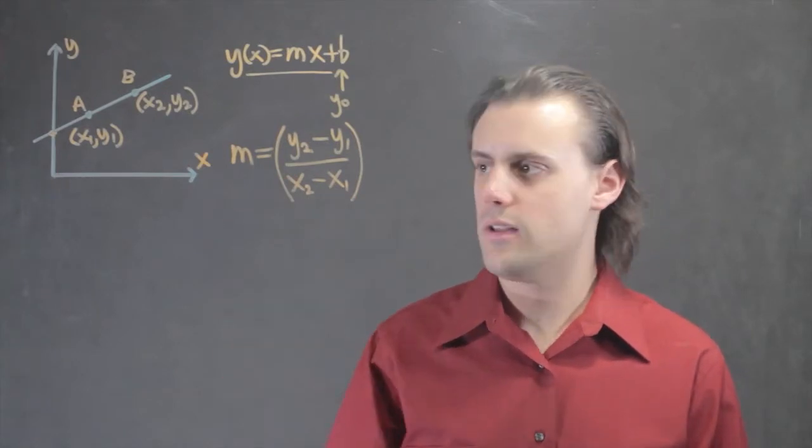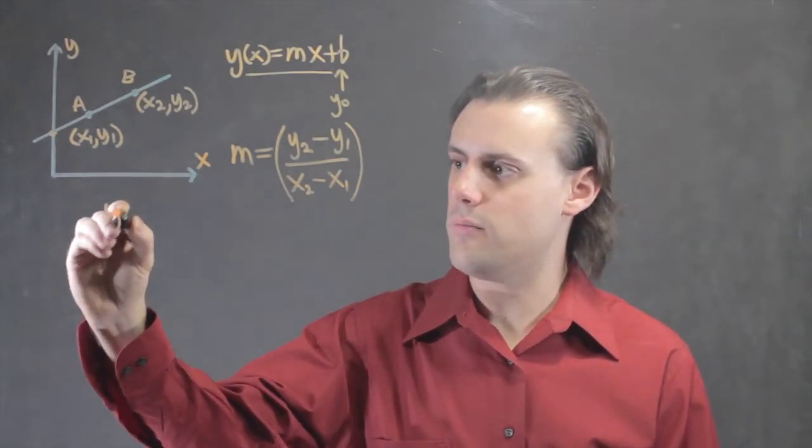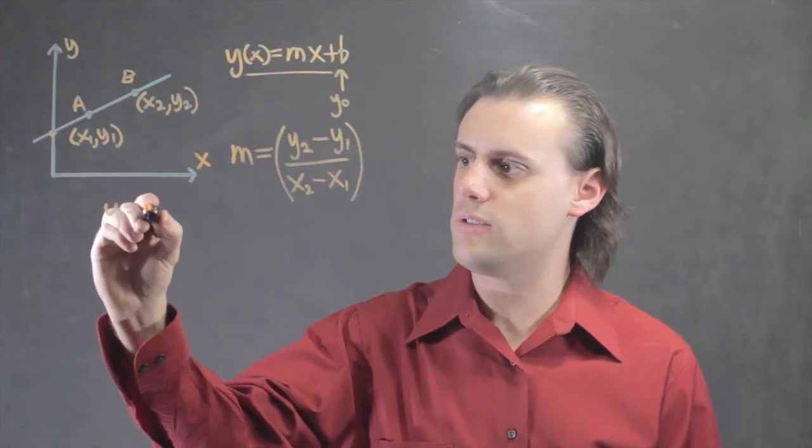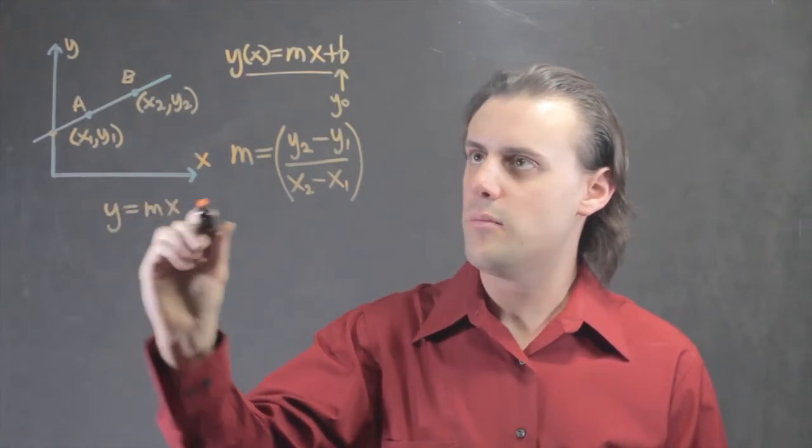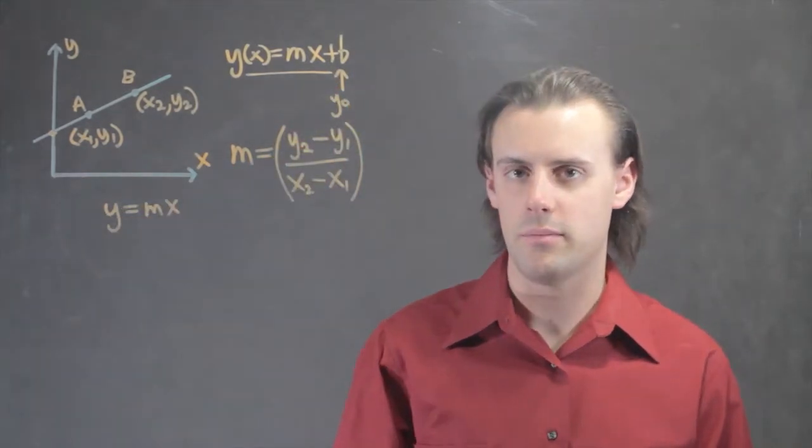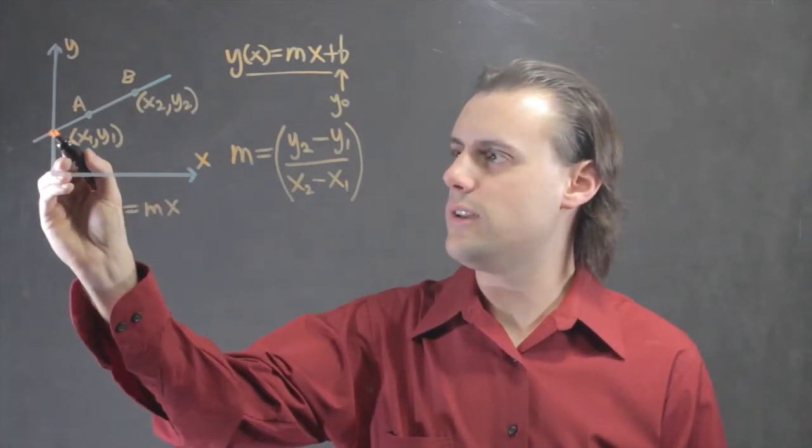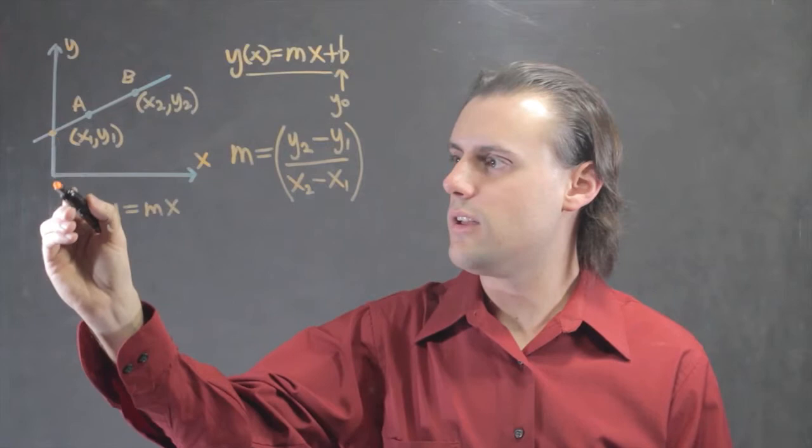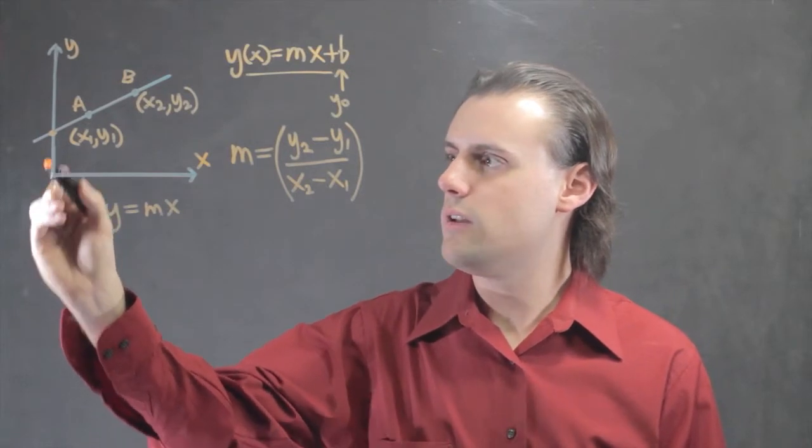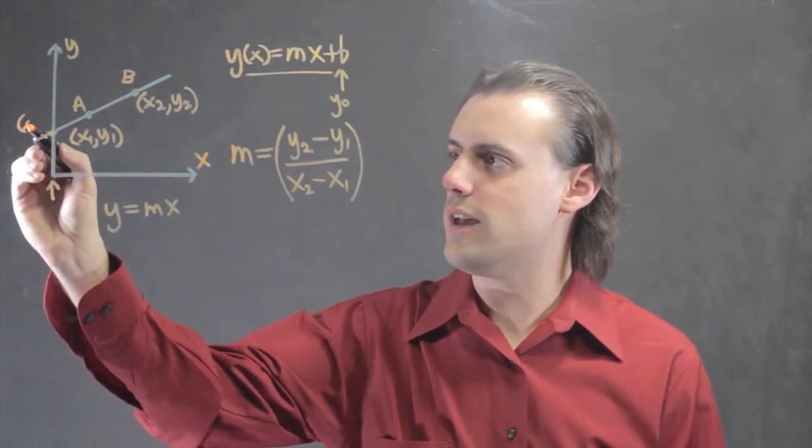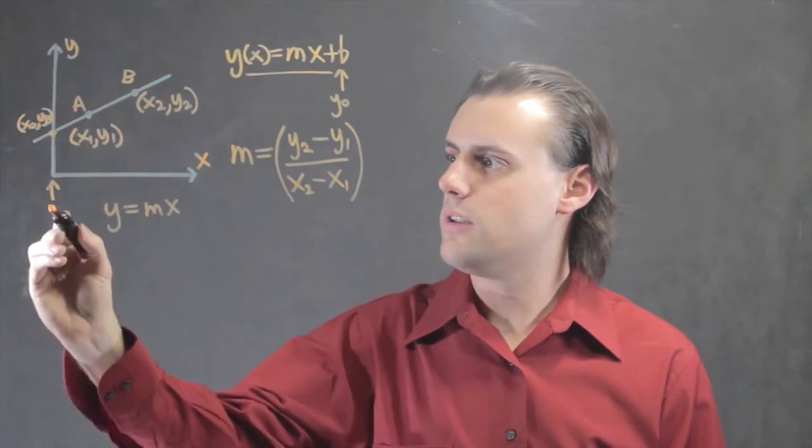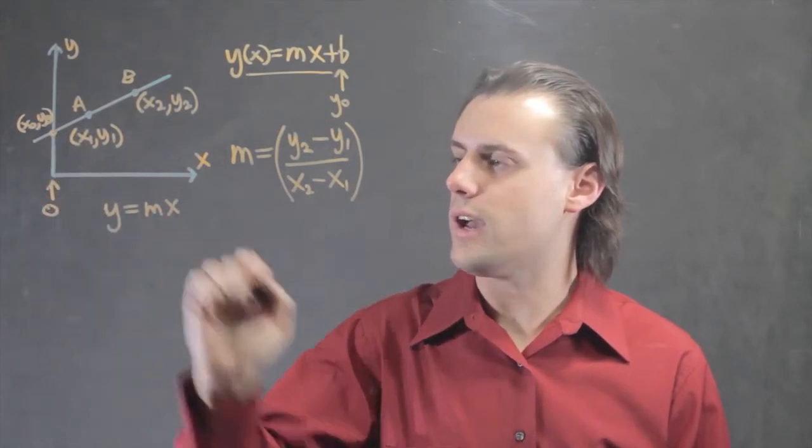Once I have this, then I have part of my solution. I have y is equal to mx, but I still need this y-intercept. To do that, I can consider this point here, and notice that my value for this coordinate, which is x0, y0, is 0 here for the x.